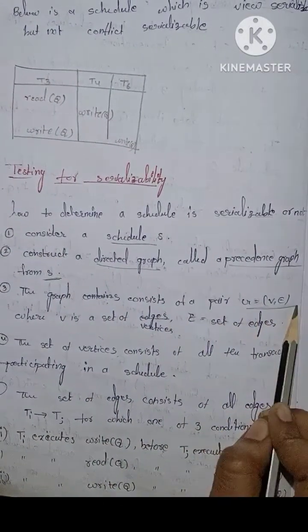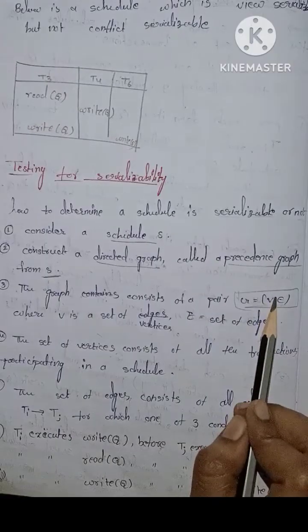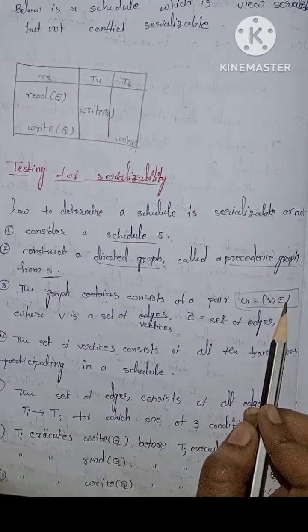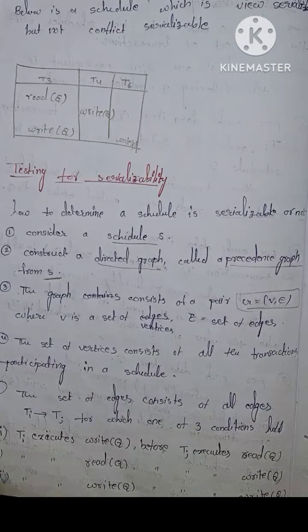The graph consists of a pair G equal to V comma E. V is nothing but vertices and E is nothing but edges. The graph consists of a set of vertices and E is a set of edges.